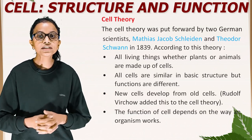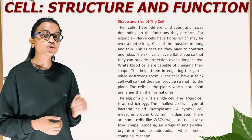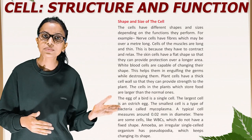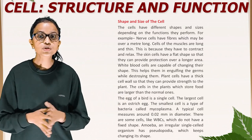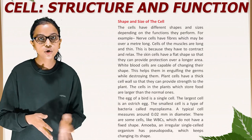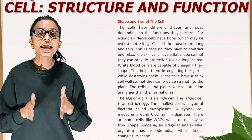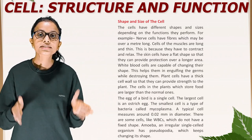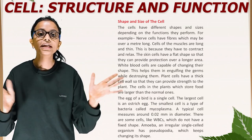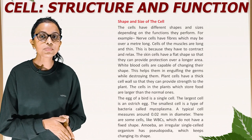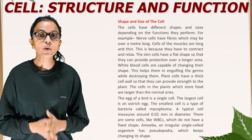Shape and size of the cell. The cells have different shapes and sizes depending on the functions they perform. For example, nerve cells have fibers which may be over a meter long. Cells of the muscles are long and thin because they have to contract and relax. The skin cells have a flat shape so that they can provide protection over a larger area. White blood cells are capable of changing their shape, which helps them in engulfing germs while destroying them.